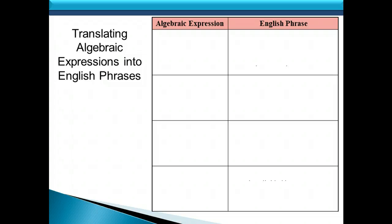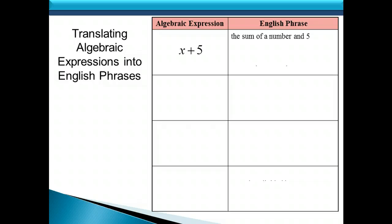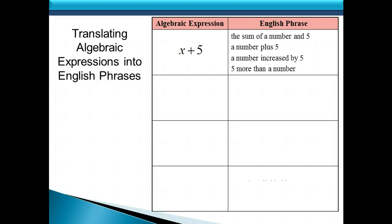Now let's translate some algebraic expressions into English phrases. First, the expression x plus 5. Think about all the different words and phrases we can use to denote addition. We could say: the sum of a number and 5, a number plus 5, a number increased by 5, or 5 more than a number. All of those represent the algebraic expression x plus 5.